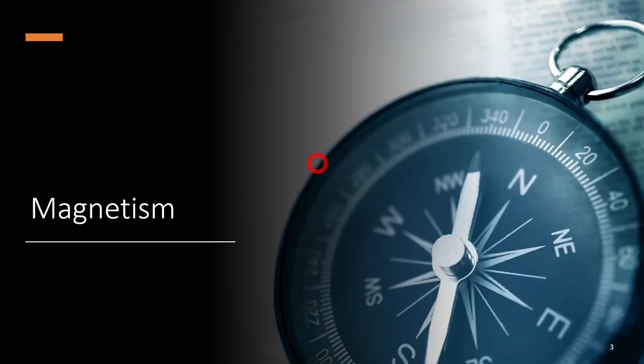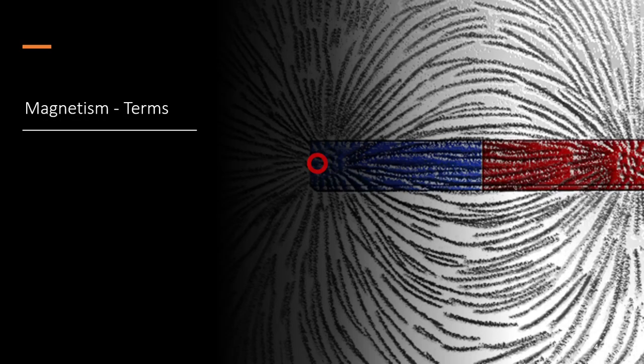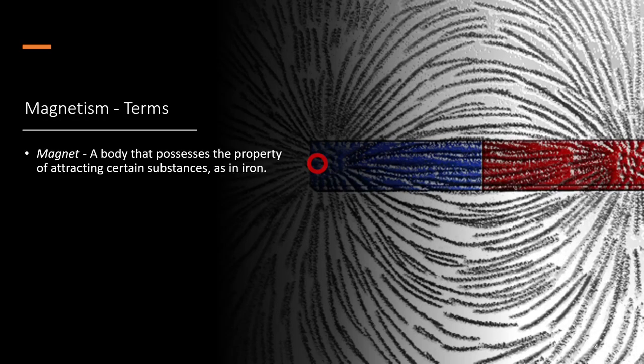First let's talk about magnetism. We're going to get some terms down so we can speak intelligently about electromagnetism. I'm showing a compass here - a compass works on the magnetic pole of the earth. A magnet is any body that possesses the property of attracting substances, most commonly iron, but there are other magnetic materials that we can use.